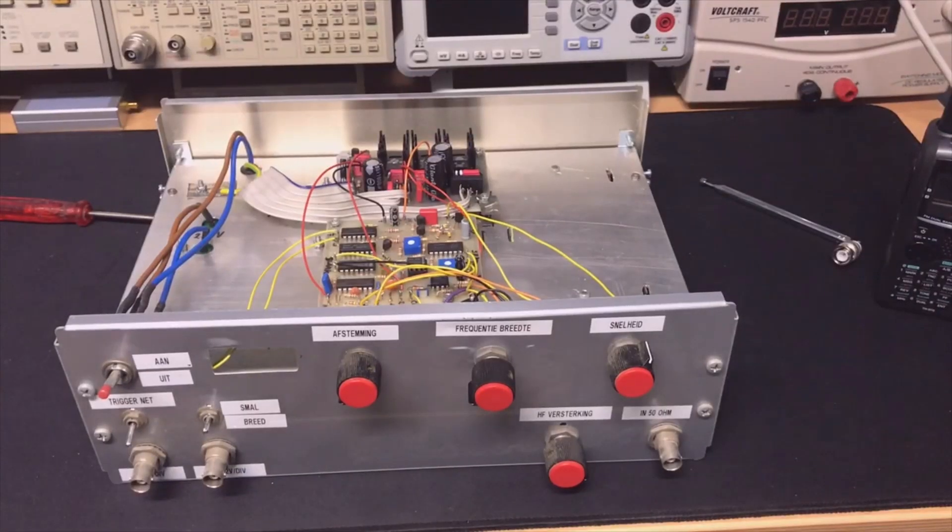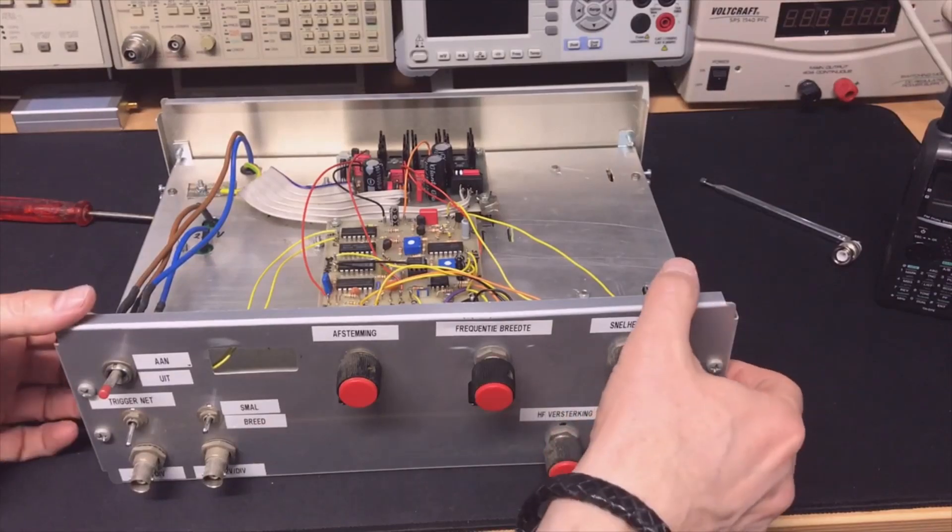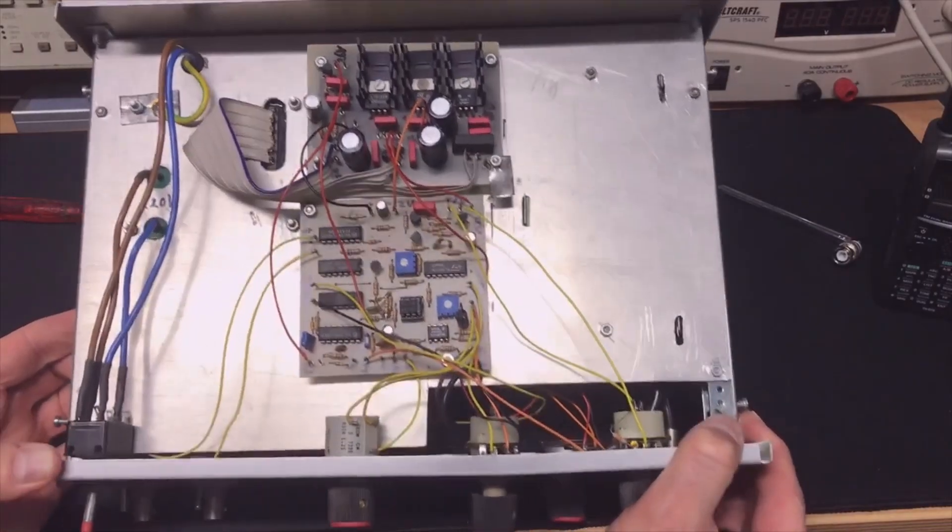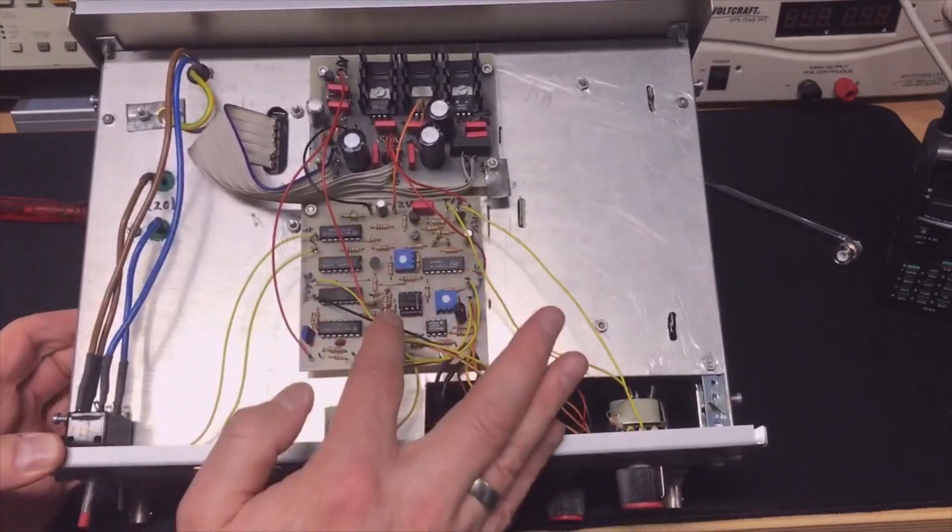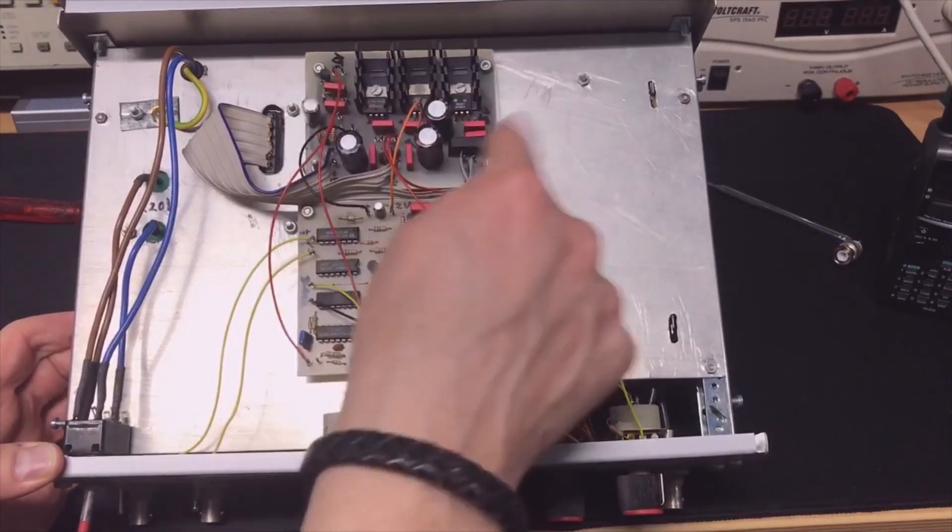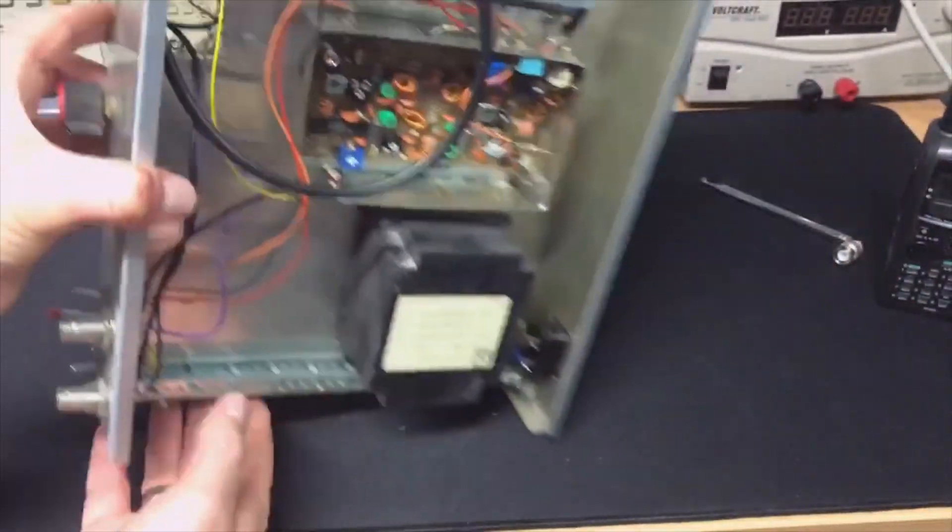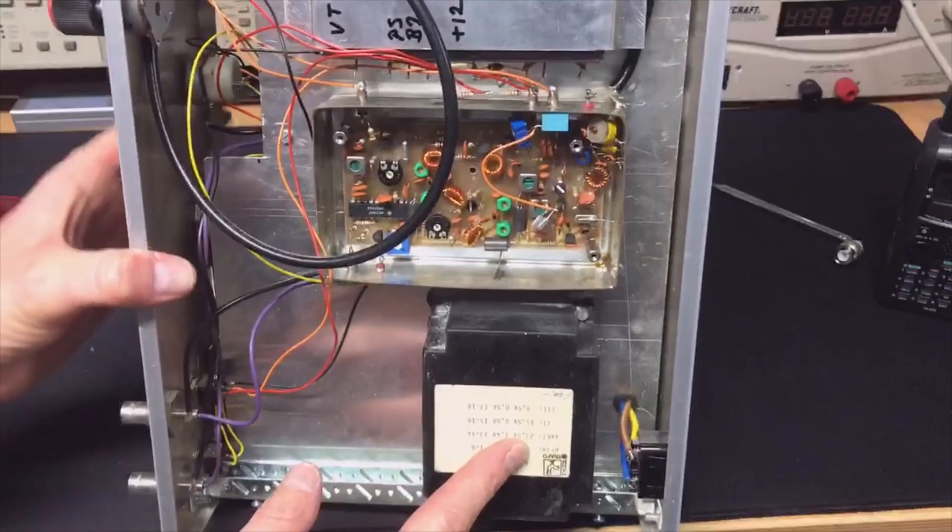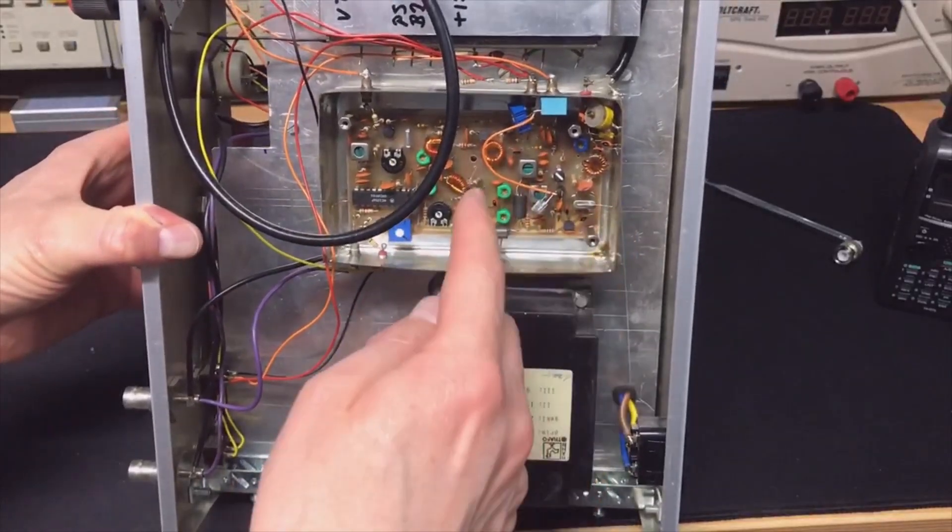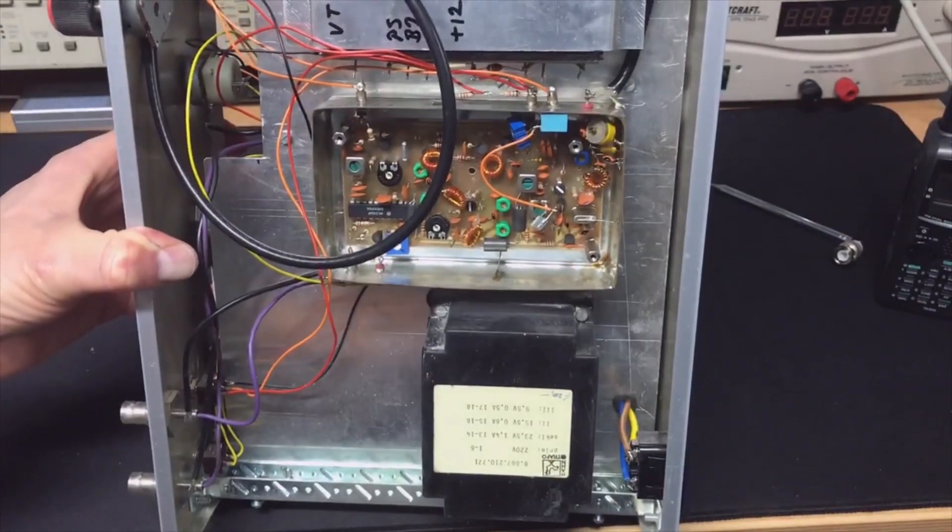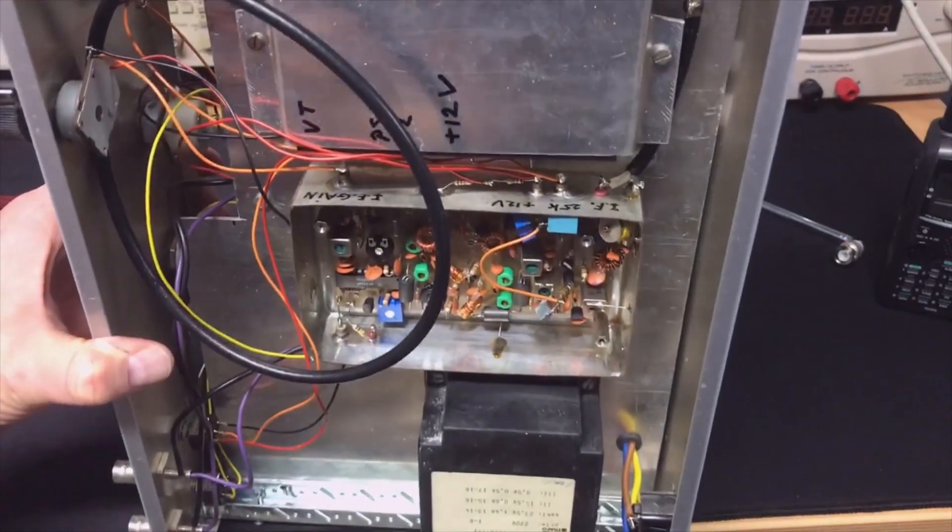Let's have a closer look at it. It is nicely built. Here we have the sync system for the oscilloscope, the power supply, and here we have a big transformer IF section. It looks like an old TV tuner, and yeah why not use that.